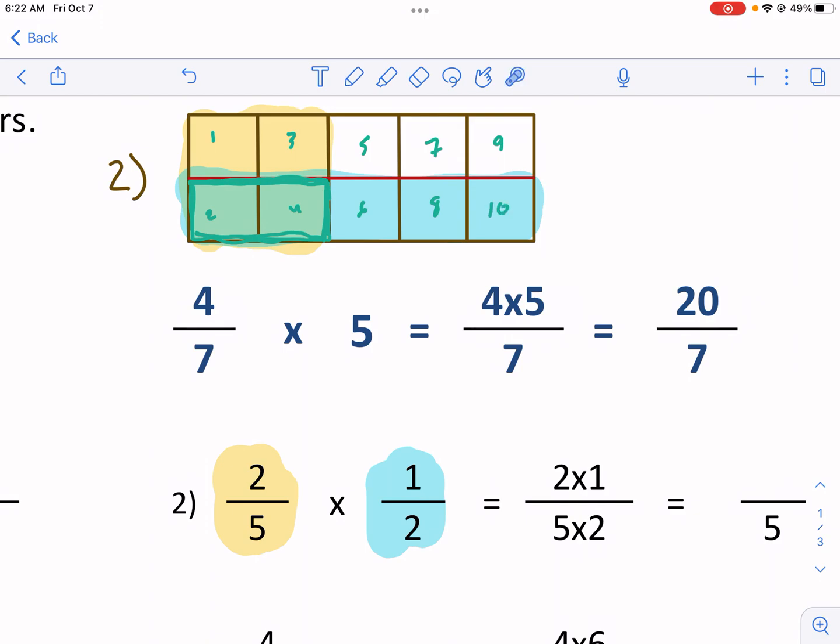How many of those pieces did we end up being on or how many were highlighted when we had the overlap? One, two. So we had two pieces out of a total of 10 chosen.